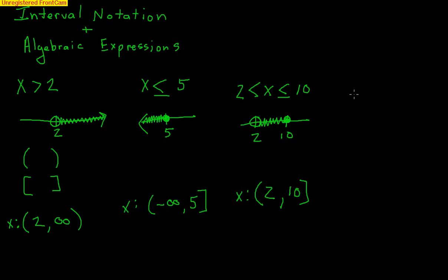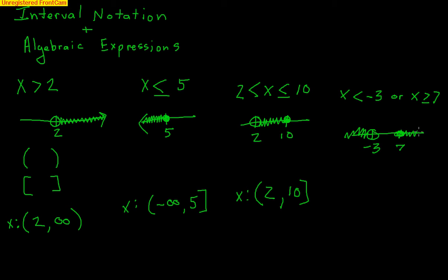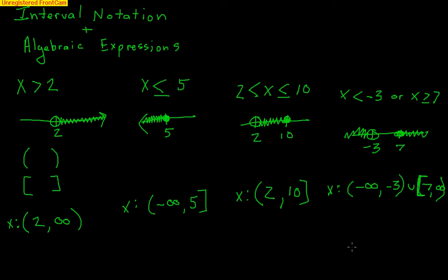We could also do 'or' inequalities. For example, x is less than negative 3, or x is greater than or equal to 7. On a number line, we'd have negative 3 with an open dot shading left, and 7 with a filled-in dot shading right. For the interval notation we use two intervals: negative infinity to negative 3 with a parenthesis, then a little 'u' meaning union, then bracket 7 all the way to infinity. Any number between negative 3 and 7 is not a possibility for x.